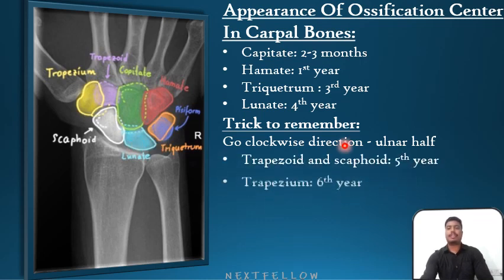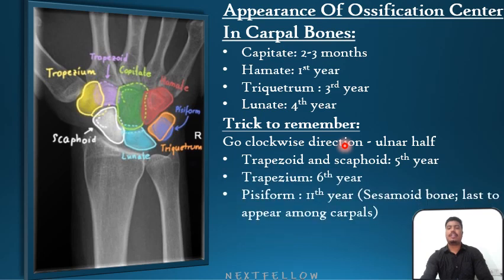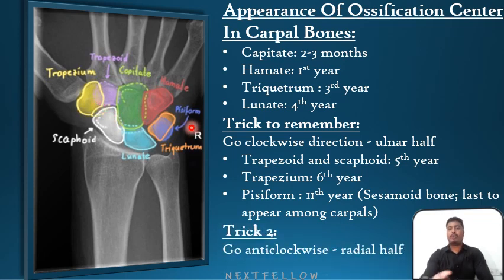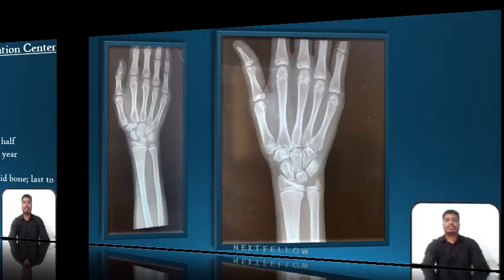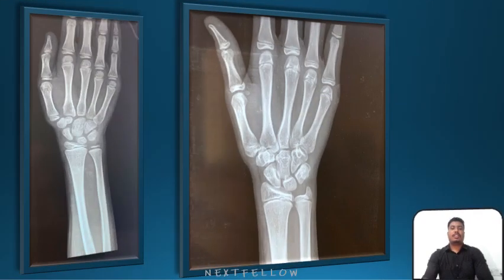Trapezoid and scaphoid appear at the fifth year. Trapezium appears at the sixth year. Pisiform appears at the eleventh year — pisiform is a sesamoid bone and is the last to appear among carpals. Take trapezoid and scaphoid together, then trapezium, then pisiform — going anti-clockwise in the radial half.